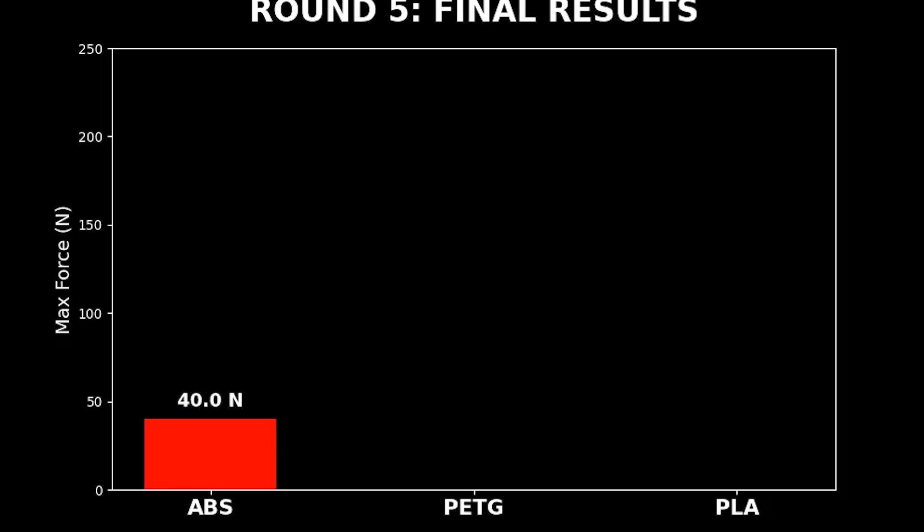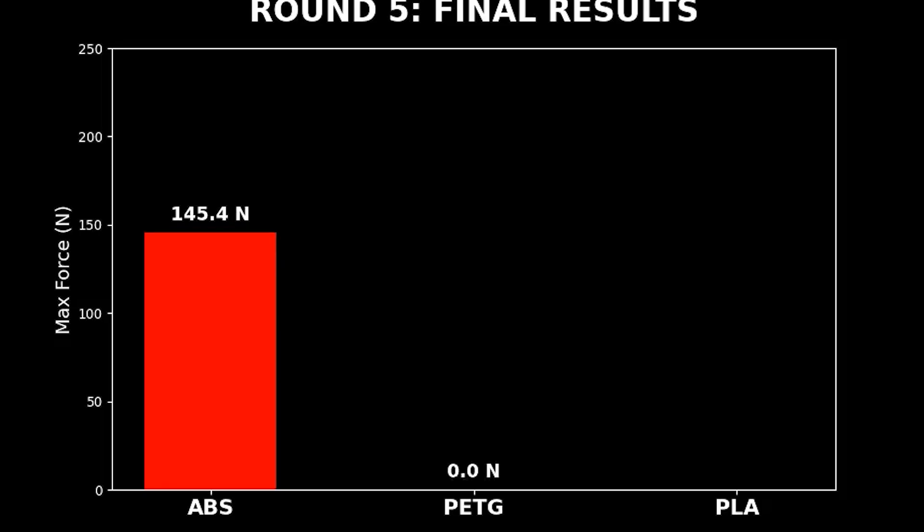And here are the results. First, ABS. It stalled at 145 Newtons. No need to say more. It's the weakest link of this round.